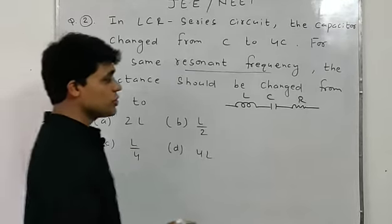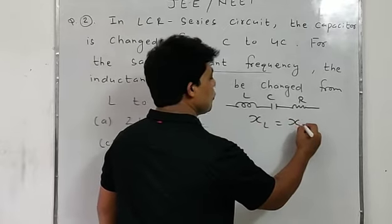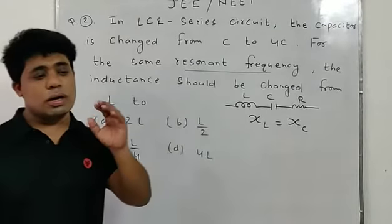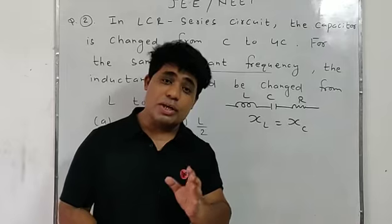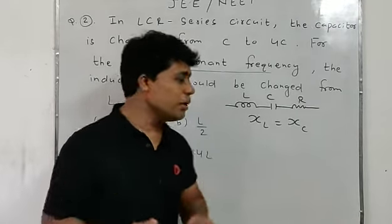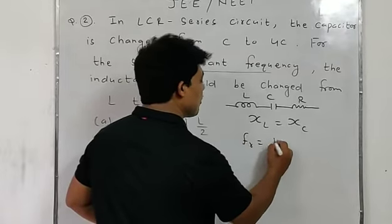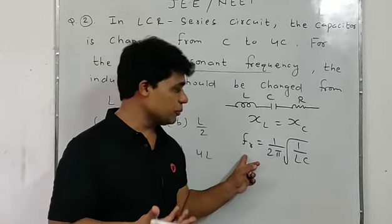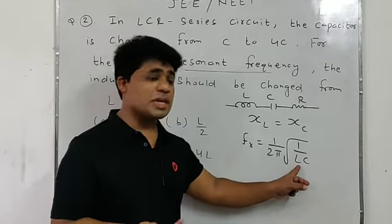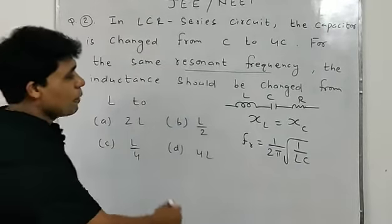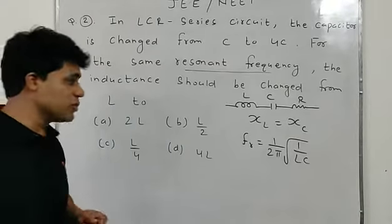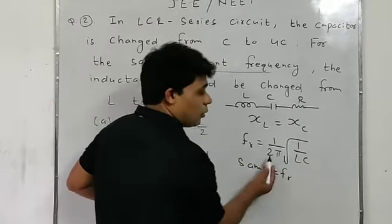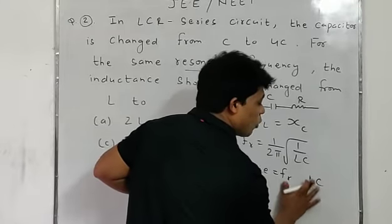When inductive reactance equals capacitive reactance, the circuit is in resonance. At resonance, amplitude of current is maximum. The resonant frequency formula is: fR = 1 / (2π√(LC)), where fR is resonance frequency, L is inductance, and C is capacitance.